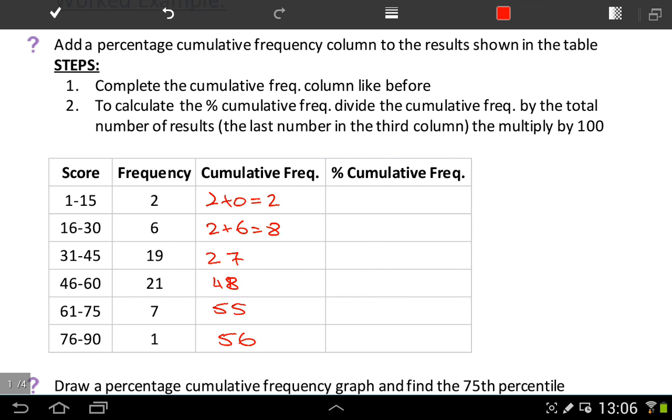To calculate the percentage cumulative frequency, we need to take each cumulative frequency, which is in the middle column, and divide it by the total number of results. This total number of results is always the last number in this middle column here. So this 56 is the total number of results that we have. Let's look at the first one. We take our cumulative frequency, which is 2, and divide it by 56, then multiply by 100. We get roughly 4%, rounding to the nearest whole number.